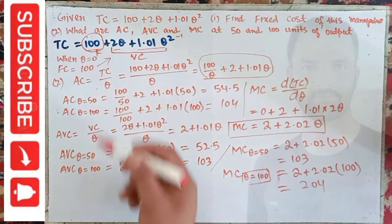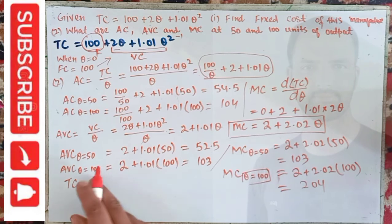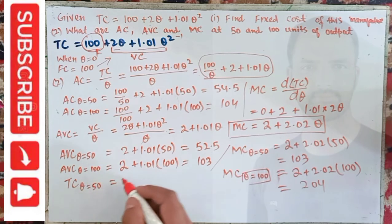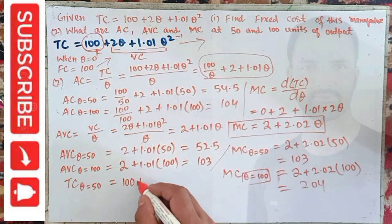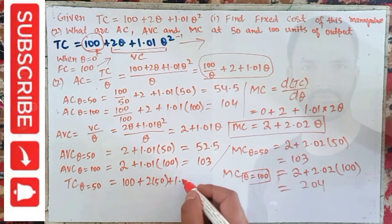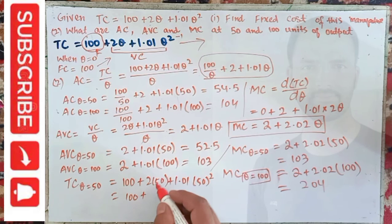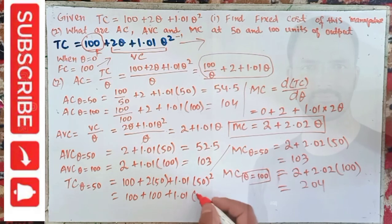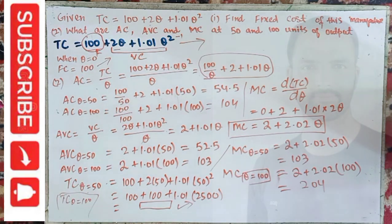We can also calculate the total cost. Total cost when Q = 50: plug Q = 50 into the TC function — 100 + 2 × 50 + 1.01 × 50² = 100 + 100 + 1.01 × 2500. You can also calculate total cost when Q = 100 as an exercise. I hope I made myself clear in this video. Thank you.